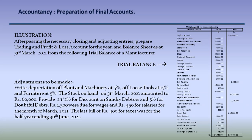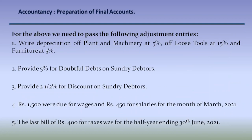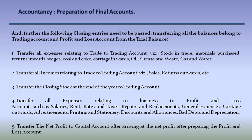Rs. 1,500 were due for wages and Rs. 450 for salaries for the month of March 2021. The last bill of Rs. 400 for taxes was for the half-year ending 30th June 2021. For the above, we need to pass the following adjustment entries: (1) write off depreciation on plant and machinery at 5%, loose tools at 15%, and furniture at 5%; (2) provide 5% for doubtful debts on sundry debtors; (3) provide 2.5% for discount on sundry debtors; (4) accrue Rs. 1,500 for wages and Rs. 450 for salaries for March 2021; (5) the last bill of Rs. 400 for taxes was for the half-year ending 30th June 2021. We also need to pass closing entries by transferring all relevant balances to the trading account and profit and loss account.